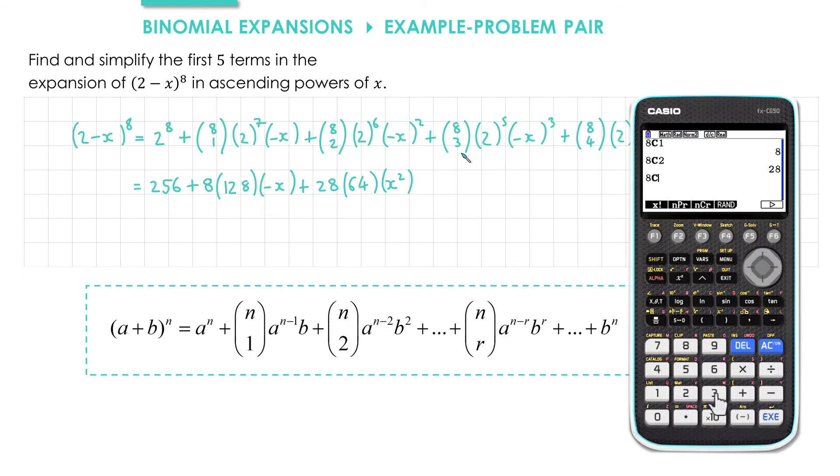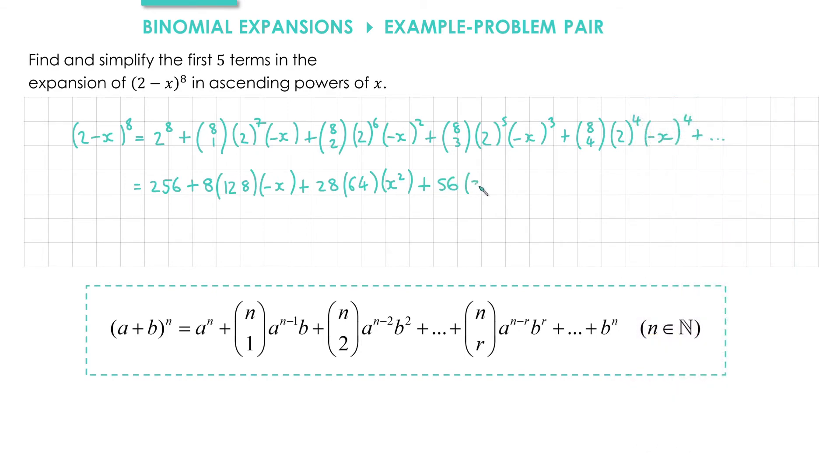Next we need 8 choose 3. That's 56. We've got 2 to the power of 5, that's 32. We've got minus x cubed, that will stay negative.